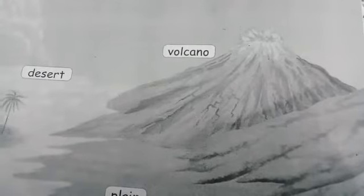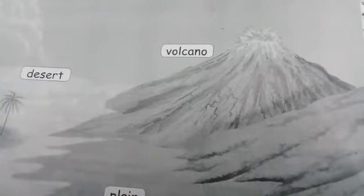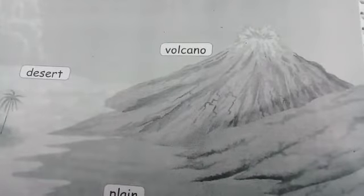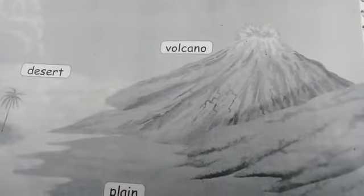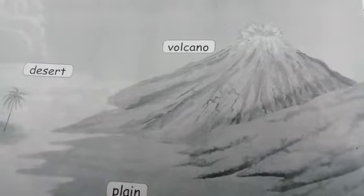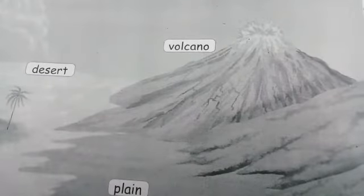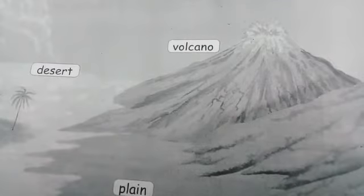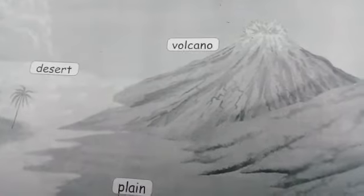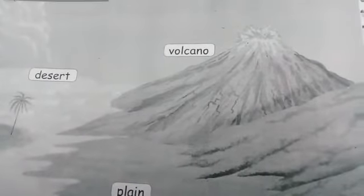Ok students, first look at here. This picture is a volcano. A volcano is an opening in the earth's crust through which lava, volcanic ash, and gases escape. Beneath a volcano, liquid magma containing dissolved gases rises through cracks in the earth's crust. Volcano in Tamil meaning - eri malai.